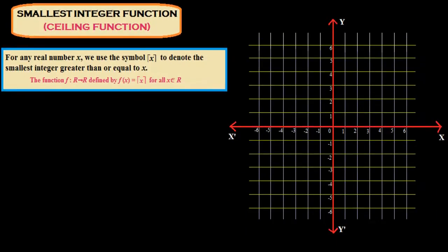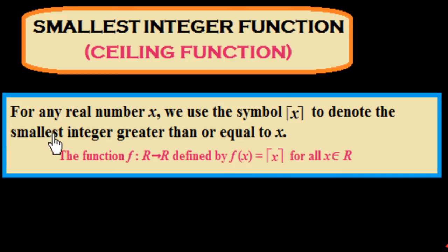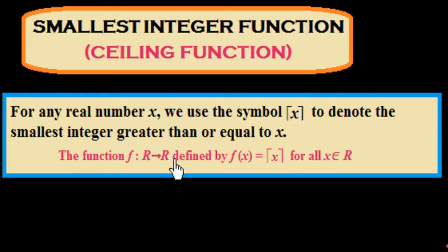Now we study about the smallest integer function. It is just opposite of the greatest integer function — where the floor takes the greatest integer less than or equal to x, here we take the smallest integer greater than or equal to x. The smallest integer function is also called the ceiling function. For any real number x, we use the symbol ceiling of x to denote the smallest integer greater than or equal to x. The function f: R to R is defined by f(x) = ceiling of x, for all x belonging to R.